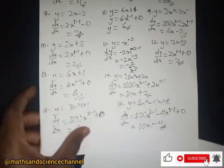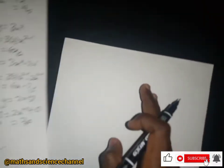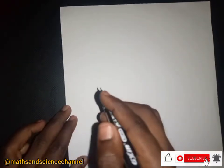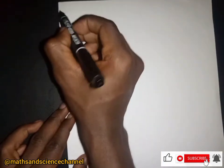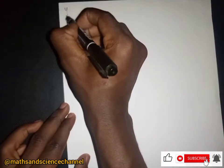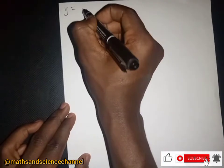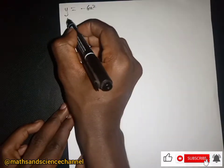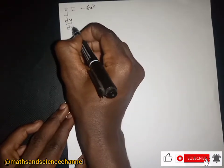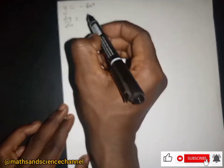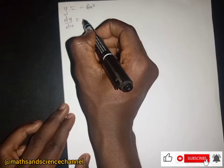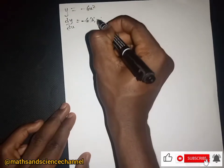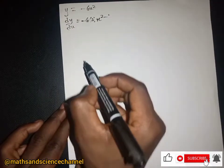Let's continue. Another example: y equal to negative 6x squared. The dy/dx is going to be — negative 6 multiplied by 2, then x to the power 2 minus 1.